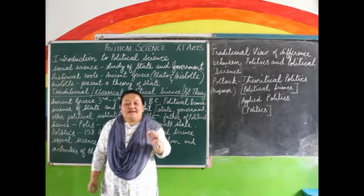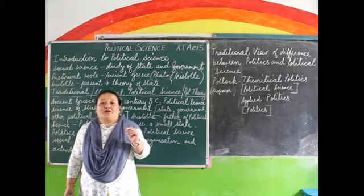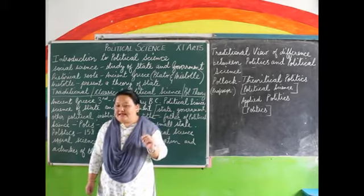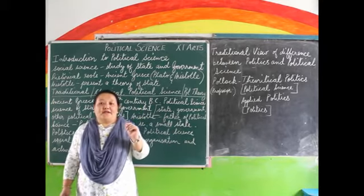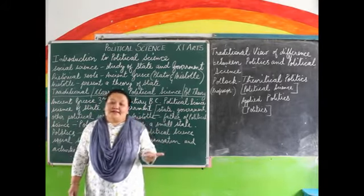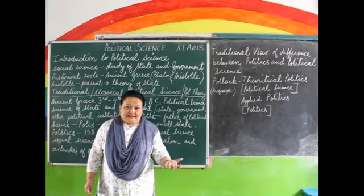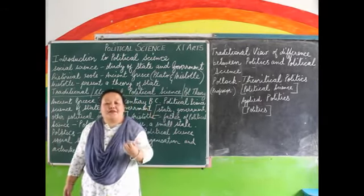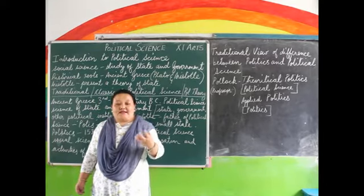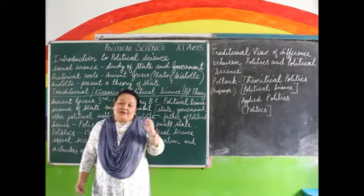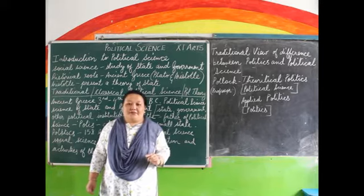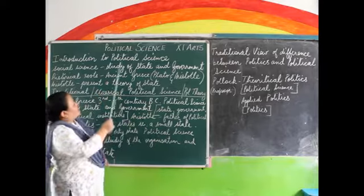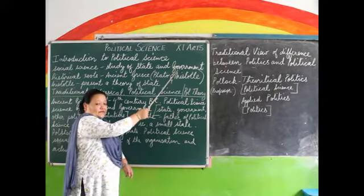Political science is a branch of social science where there is a systematized study of the state. So why is it called a social science? It is called a social science because it is the study of human nature as well as society. In political science, you have to remember that the study is concentrated on the study of state and government.